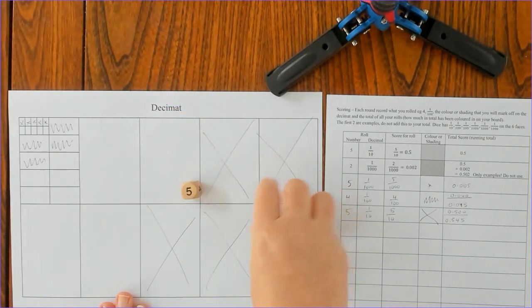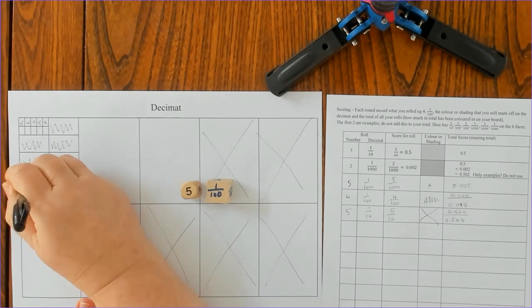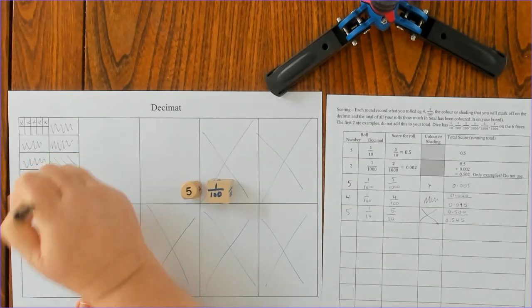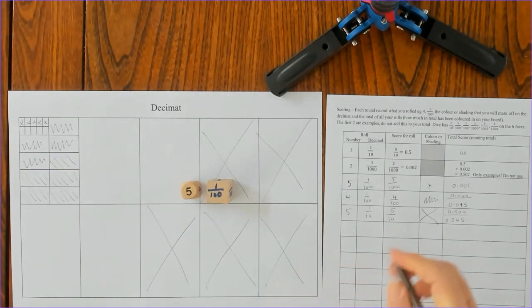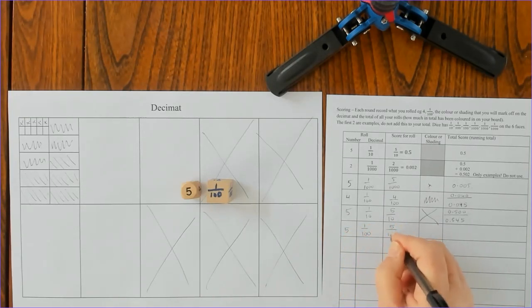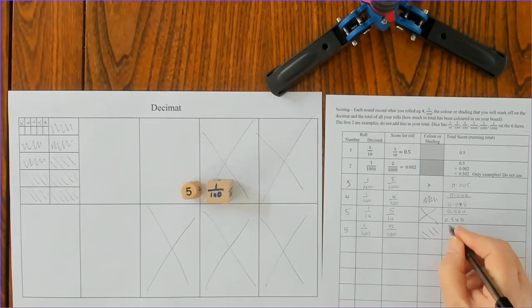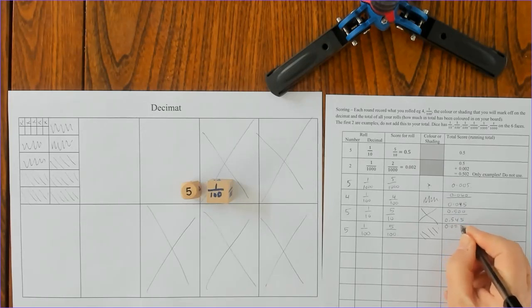Five hundredths, so let's go one, two, three, four, five. You can see now that I did lines this way, so now when I add in my five hundredths...